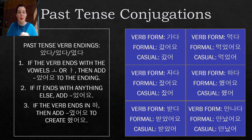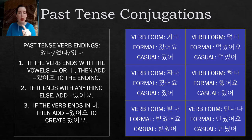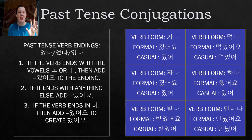Hopefully that last slide rang a couple bells. Now we are onto past tense conjugations, and I promise this is not super different from the present tense. Our past tense verb endings are 았, 었, and 였. We are really just adding a double 시읏 — that S sound. But remember, when it comes at the bottom of a syllable block, it makes a sort of cut-off sound rather than a full T. So we say 았, not S.